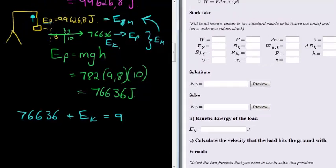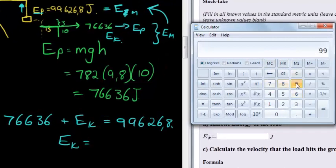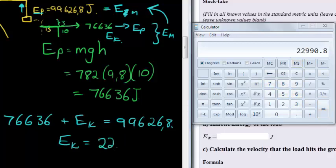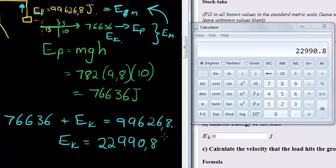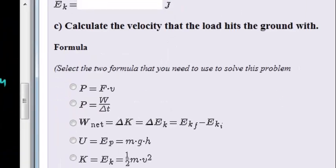original mechanical energy of 99626.8. Which means my kinetic energy is simply 99626.8 minus the potential energy 76636 gives me 22990.8 Joules. And the final question is, calculate the velocity that the load hits the ground with.